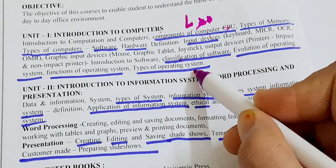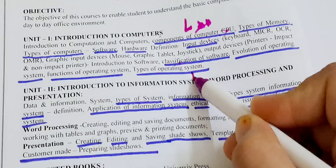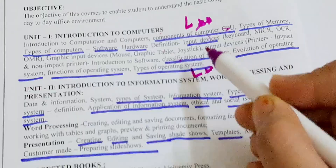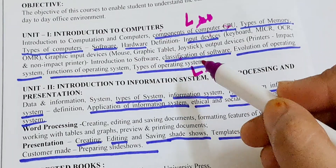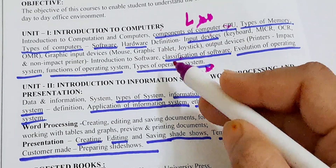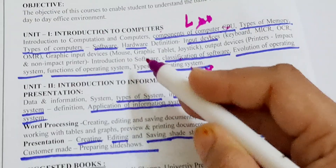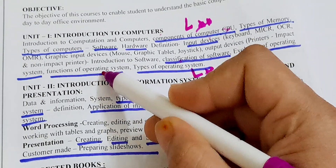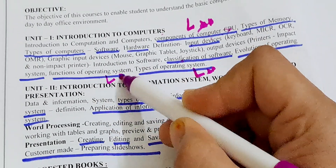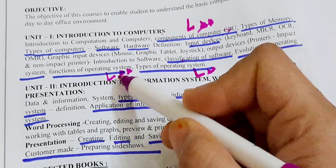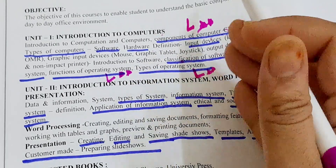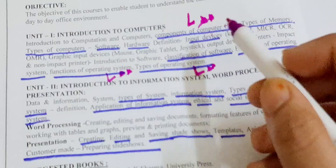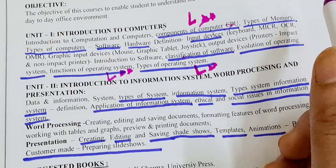The second most important topic is Types of Operating System — this is a long question. Next is Functions of Operating System, which is also very important for a long answer. These are three important long questions in unit one.